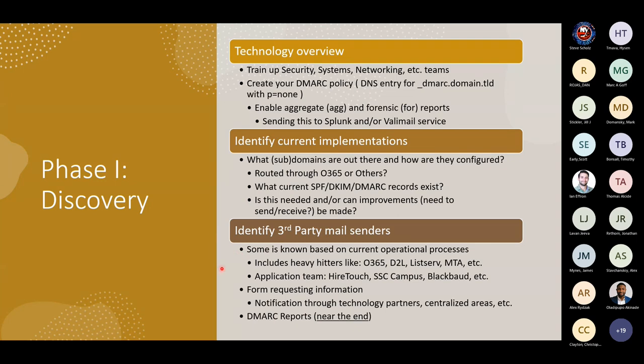The biggest part is identifying all your third-party mail senders. Some are easy wins: Office 365, your LMS like Desire2Learn, Listserv, a mass mail MTA agent. Application teams and marketing groups can give you others. For our case we had Higher Touch, SSC Campus, and Blackbaud. I made a Microsoft Form and reached out to all campus groups through our Technology Partners unit — a mix of centralized and decentralized IT. I said give me your third-party mailers; if you don't, mail won't come through; if you do, your mail will land in inboxes better. It was an easy win.